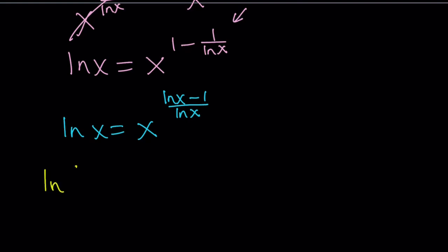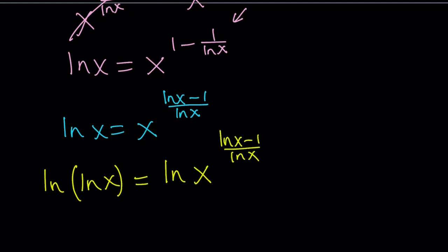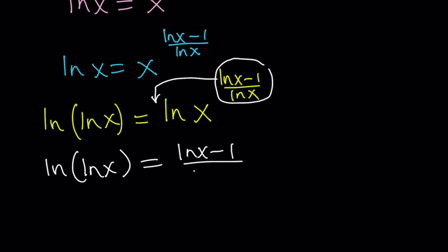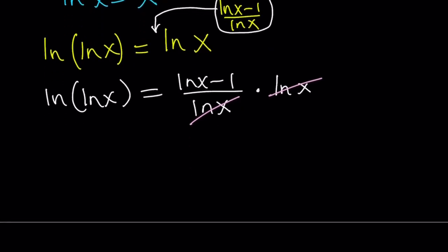Taking ln of both sides gives us ln(ln x) on the left — a double ln, which is kind of cool. We move the power (ln x minus 1) over ln x to the front as a coefficient: ln(ln x) equals (ln x minus 1) over ln x times ln x. Notice ln x cancels out — and of course we ensure ln x ≠ 0 — leaving us with ln(ln x) equals ln x minus 1.